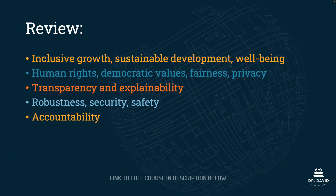In this lecture, we have gone over the five OECD AI principles. Remember that these differ from the OECD AI classification framework from domain one. The five principles are: number one, inclusive growth, sustainable development, and well-being; number two, human rights, democratic values, fairness, and privacy; number three, transparency and explainability; number four, robustness, security, and safety; and number five, accountability. You need to remember these for the exam, and you're going to see this language throughout the course, so it's really important to review and understand these concepts well.